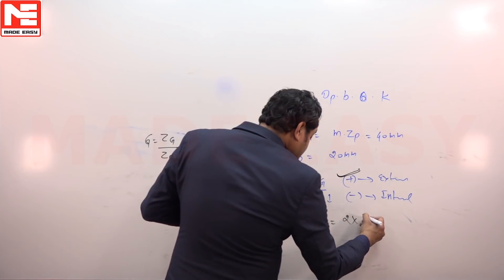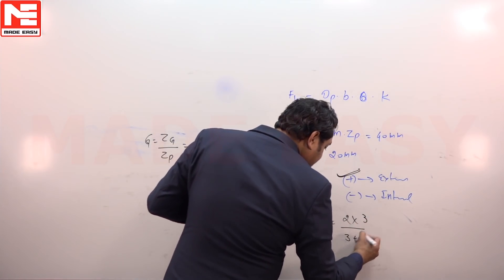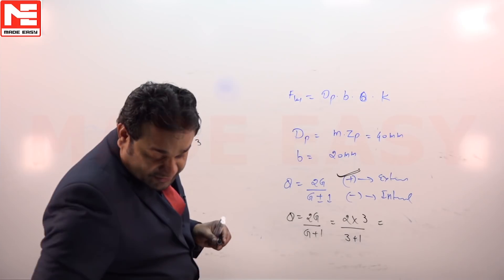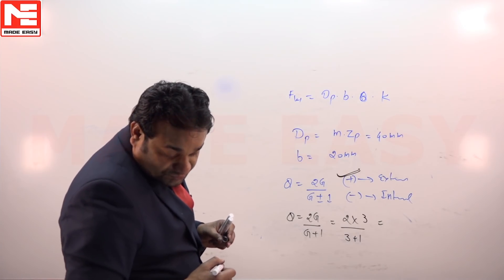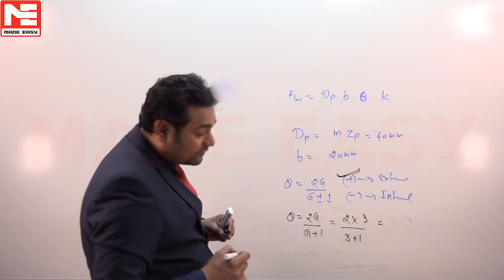So 2 times 3 divided by 3 plus 1, your answer for that factor is 1.5.